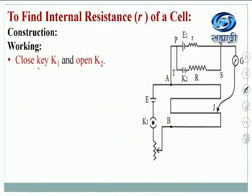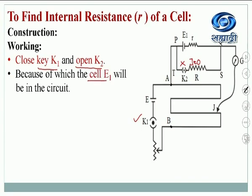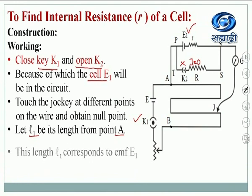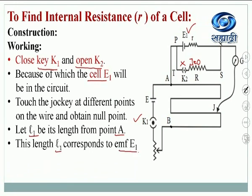Working: close key K1 and open K2. That means close K1 and don't close K2, which means I is equal to zero here. Because of which cell E1 will be in the circuit. Touch the jockey at different points on the wire and obtain the null point. This length L1 from point A will correspond to EMF E1 because E1 is in the circuit.